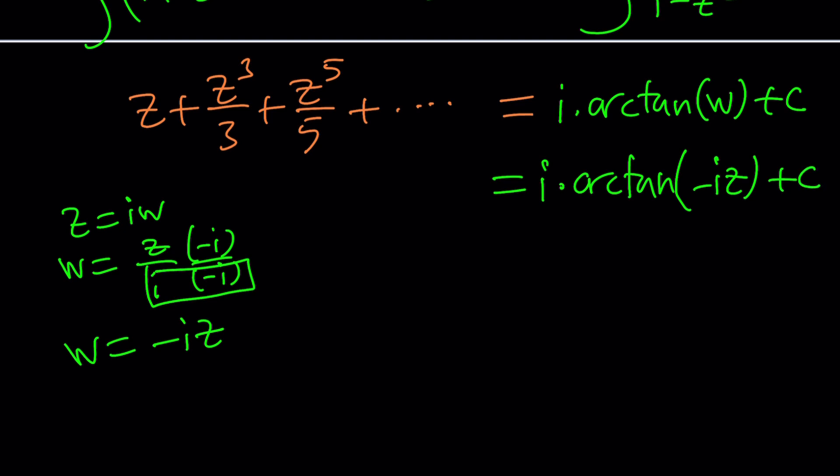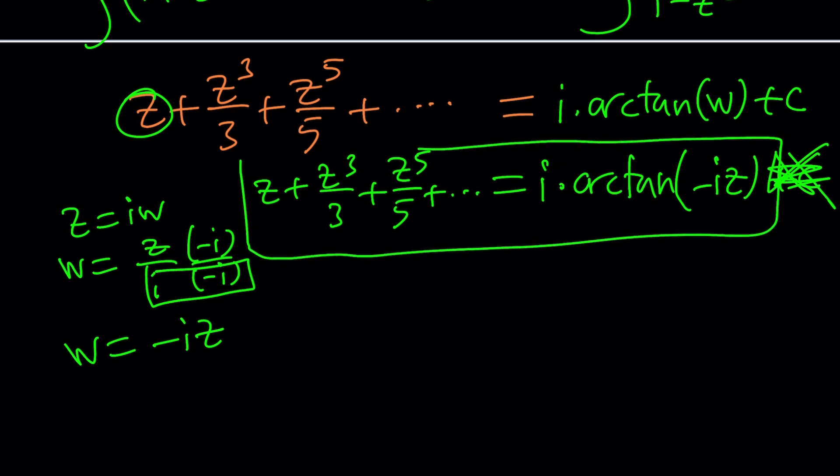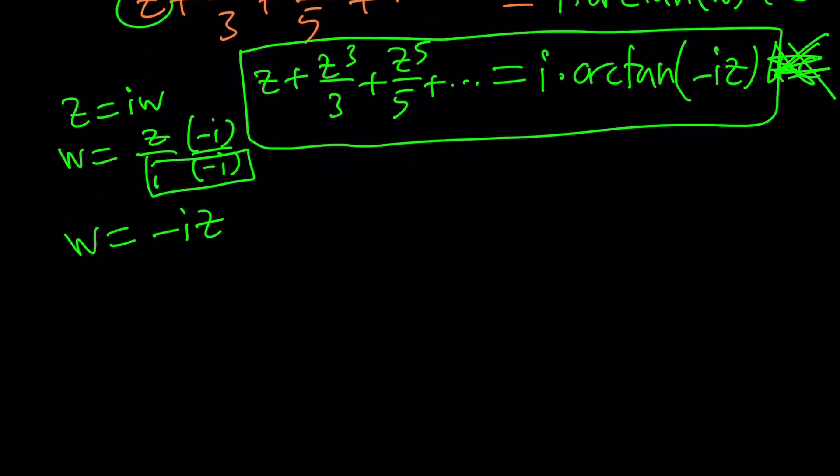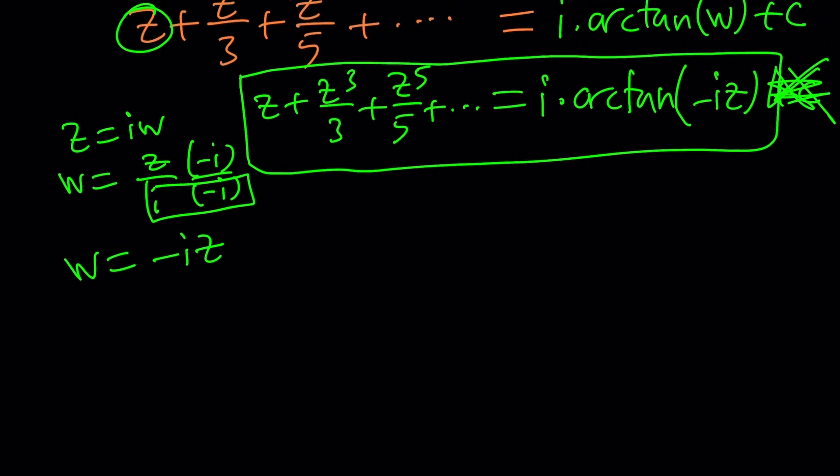If you replace z with 0 on both sides you're going to get 0 equals c, which means c equals 0, so I can get rid of the c. Now here's what I have so far. This infinite series sum is equal to i times arctangent negative iz. Some of you will probably recognize what it is but we're going to talk about it in a little bit.